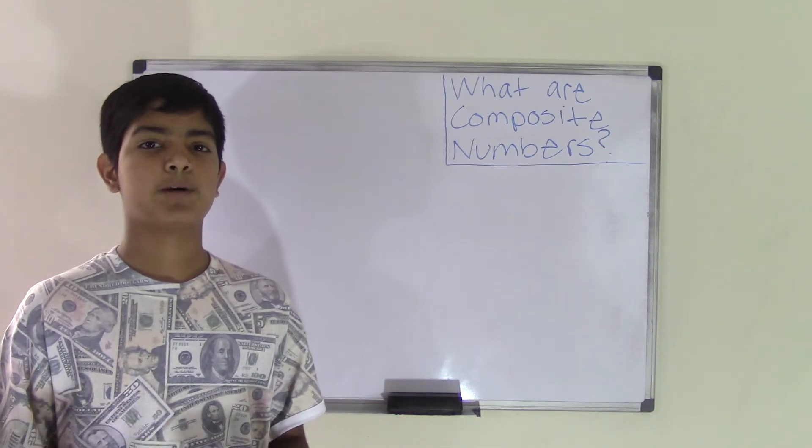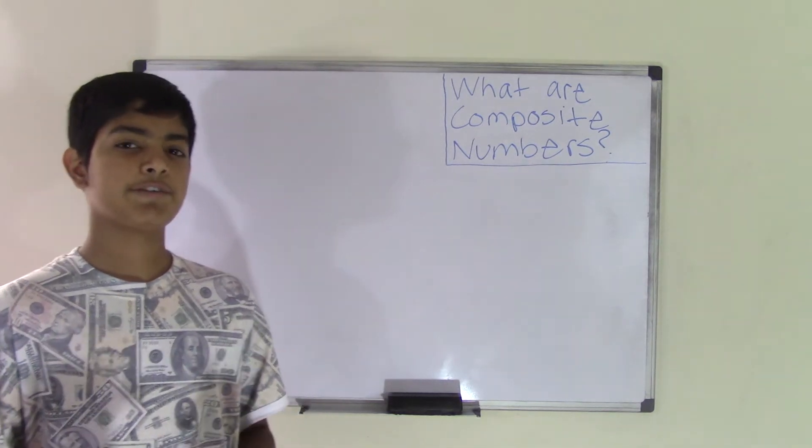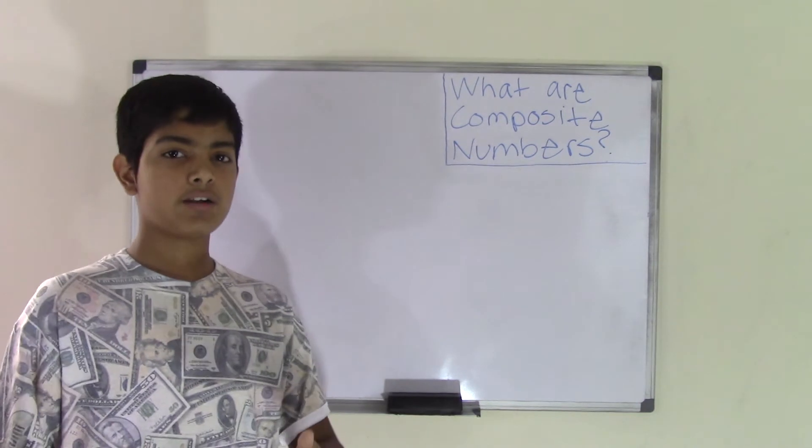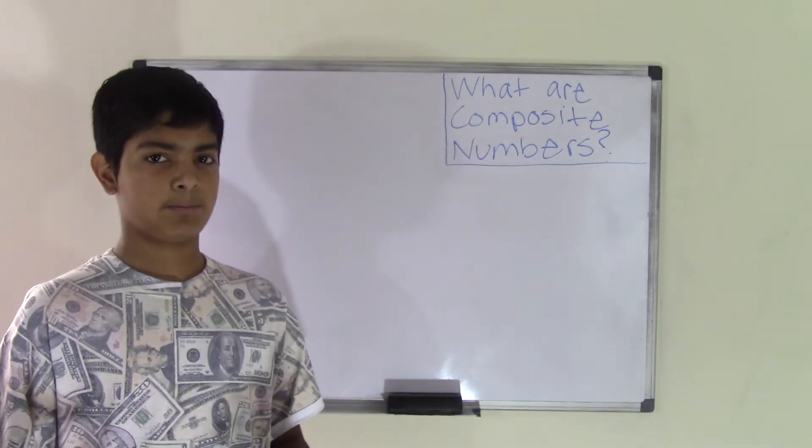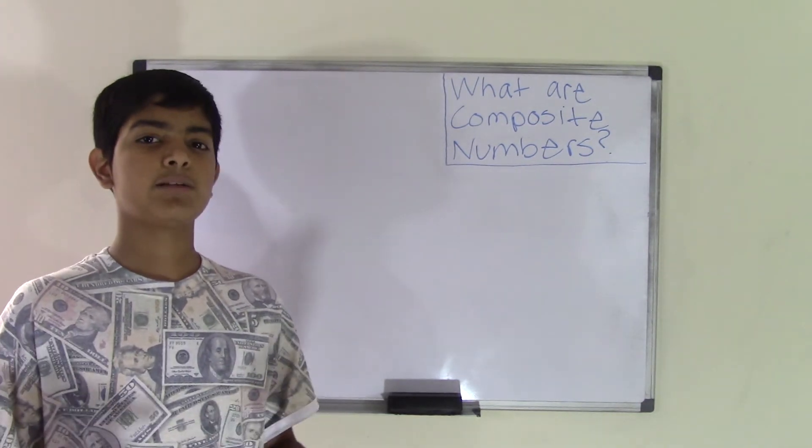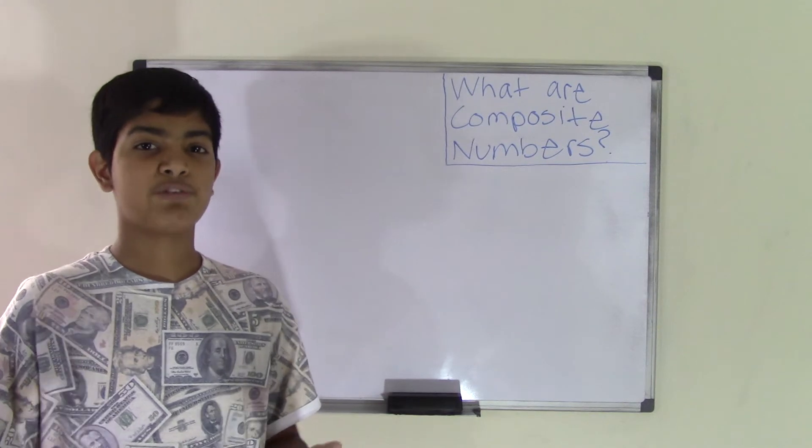Now in our previous video we did talk about what are prime numbers. In this video we will talk about numbers apart from the prime numbers, which are composite numbers. A composite number is a number that has more than two factors.